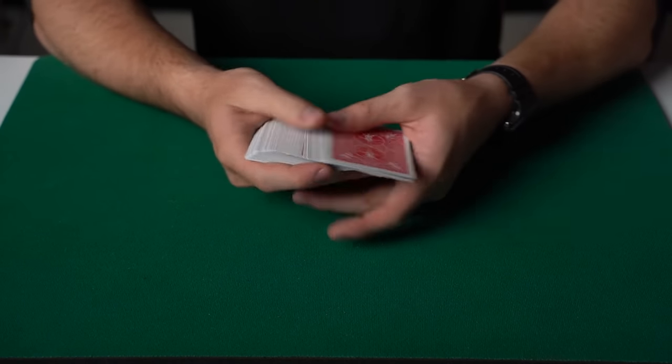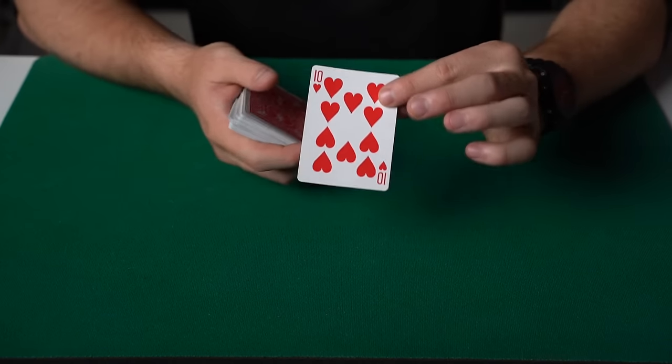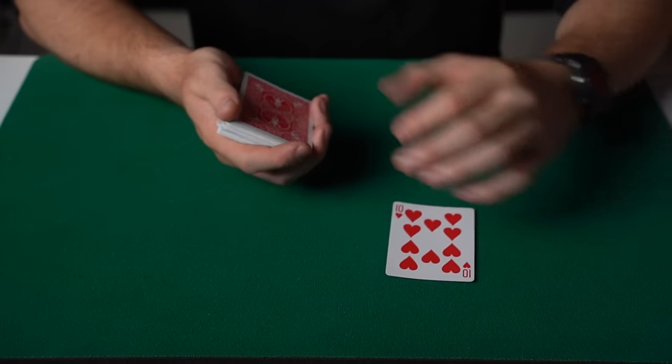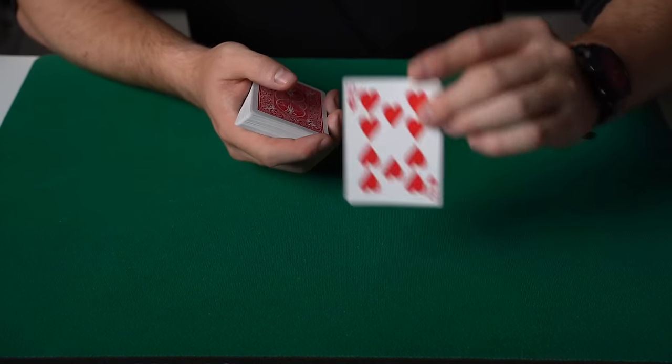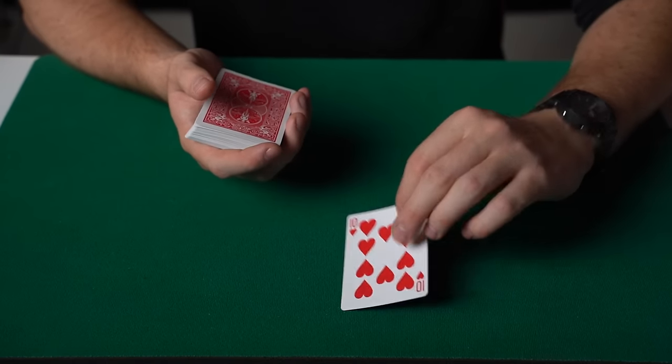Then what you need to do is allow the spectator to choose any card that they like. So it doesn't matter, let's just say they choose this card here, the ten of hearts. You're going to show them the card and as they're looking at the card, you need to do the only sleight that this magic trick requires.